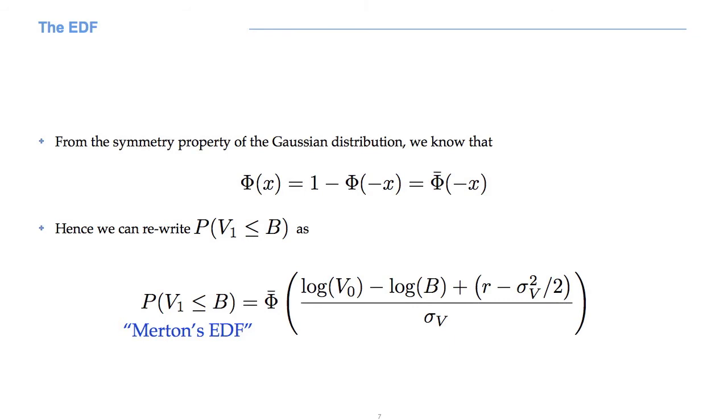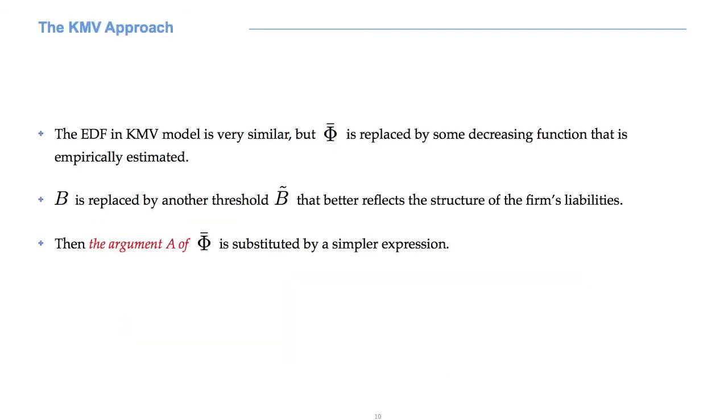Using this, we can rewrite our probability of default as the survival function of a standard Gaussian computed in D2. Yes, this is exactly D2 when capital T is equal to 1. This is the EDF under Merton's model. Once again, notice that it is expressed in terms of the survival function of a standard Gaussian.